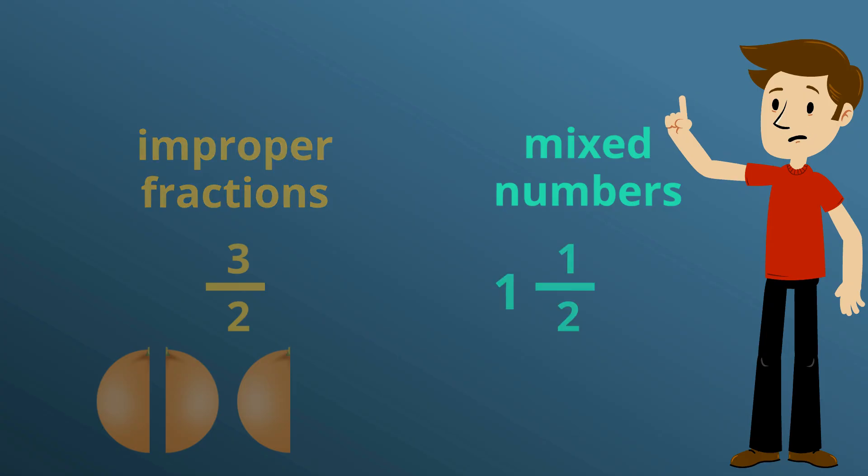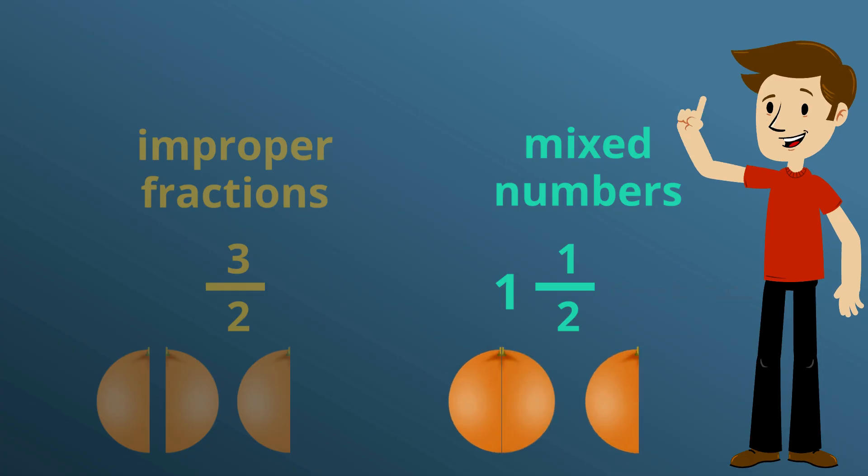A mixed number is a mix of a whole number and a fraction. For example, one and a half. Mixed numbers are also greater than one.